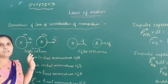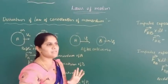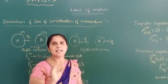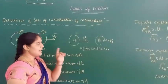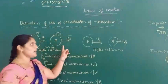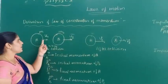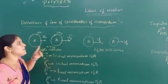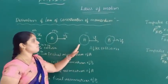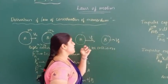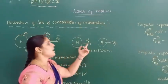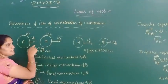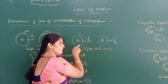The law of conservation of momentum states that the total momentum of an isolated system of interacting particles is conserved or remains constant. To prove that, let us consider two objects A and B. Object A moves with initial velocity U1 and object B moves with initial velocity U2. After collision, object A moves with final velocity V1 and object B moves with final velocity V2.